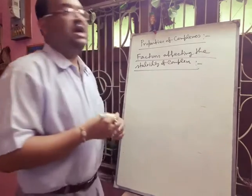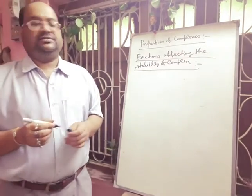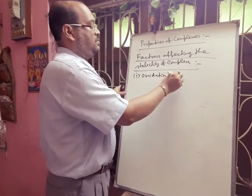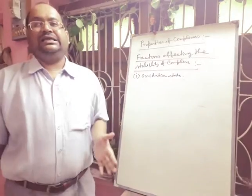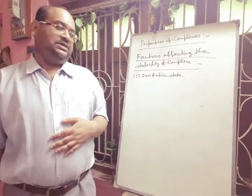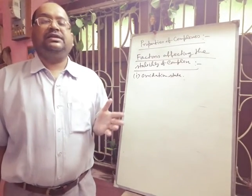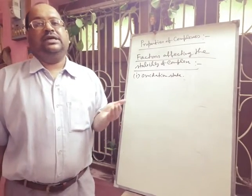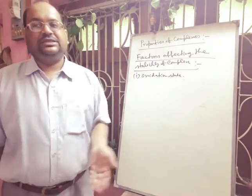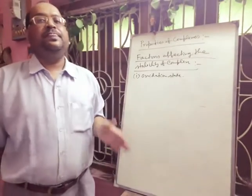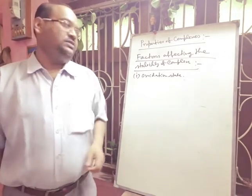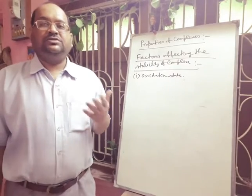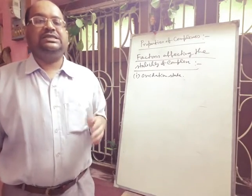The first factor affecting stability is the oxidation state of the metal. Higher the oxidation state, greater will be the stability of the complex. For example, ferricyanide (Fe³⁺, higher oxidation state) is more stable than ferrocyanide (Fe²⁺, lower oxidation state).